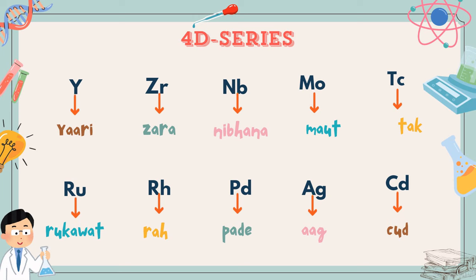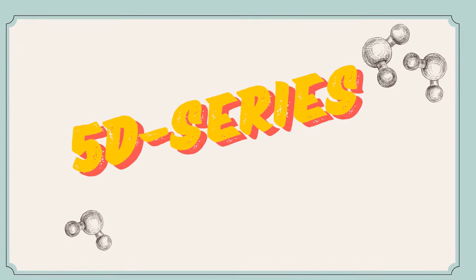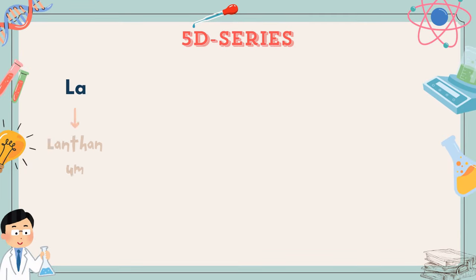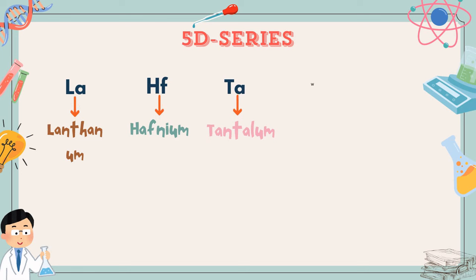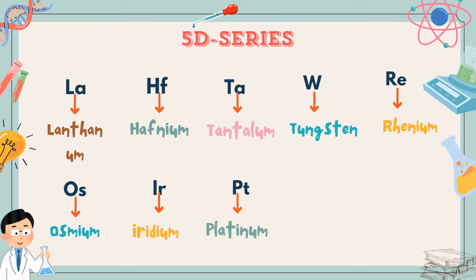Let's move on to the last series. That is our 5D series. The elements are lanthanum, hafnium, tantalum, tungsten, rhenium, osmium, iridium, platinum, gold and mercury. Let's see the trick now.